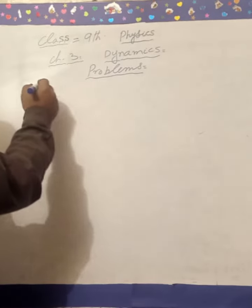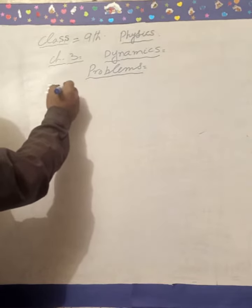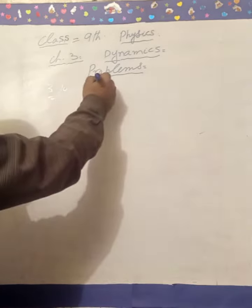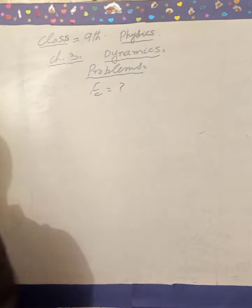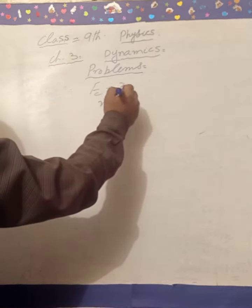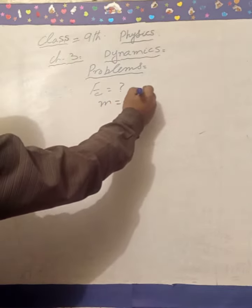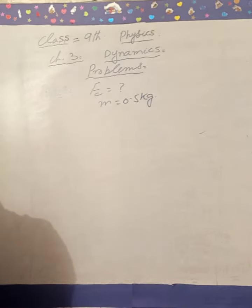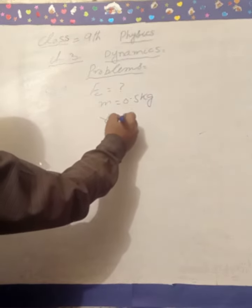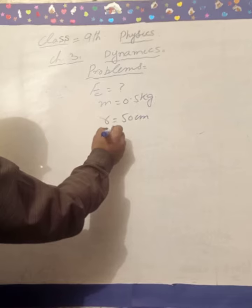Next, we have problem 3.10. How much centripetal force Fc is needed to make a body of mass - the mass given is 0.5 kg - move in a circle of radius - the radius given is 50 cm.